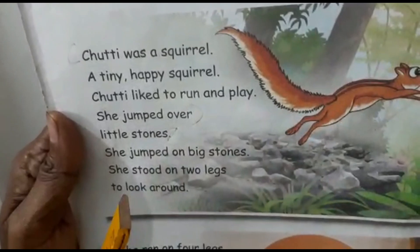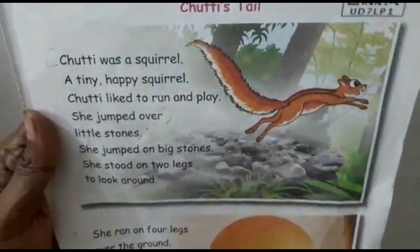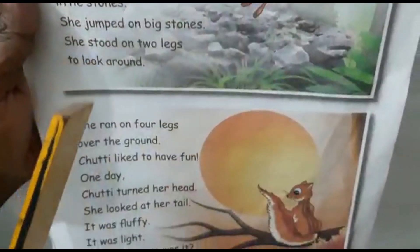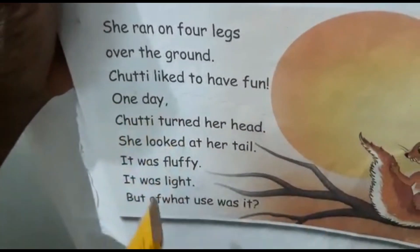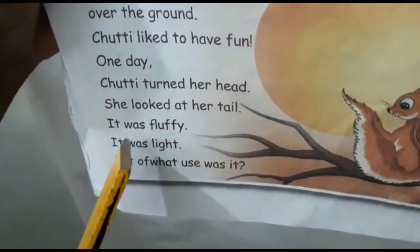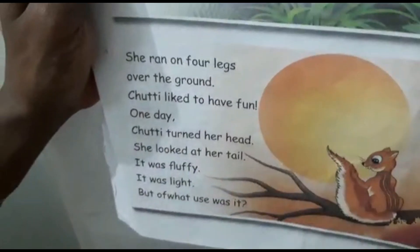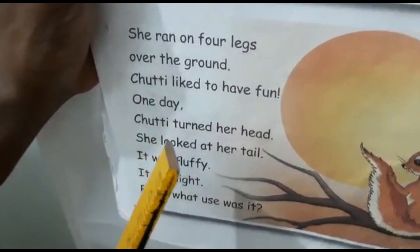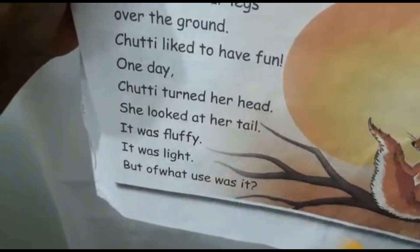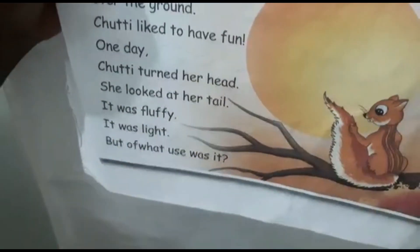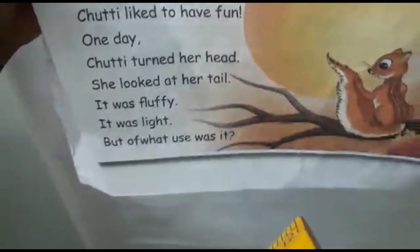She jumped over little stones and there was a big stone. Again she stood on two legs — standing on two legs and seeing everywhere all around. She ran on four legs over the ground. Chutti liked to have fun. One day, Chutti turned her head and she looked at her tail. It was fluffy and it was light. But of what use was it? So Chutti is thinking: what is the use of having this tail?